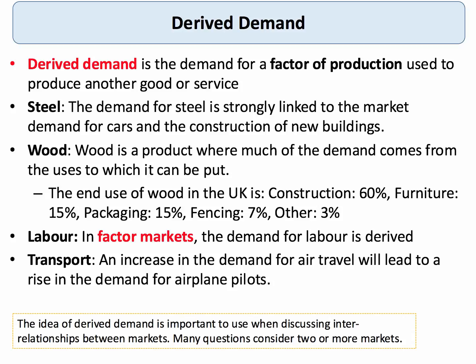Wood has a very strong derived demand — it has many end uses: it can be used in construction, in furniture, in fencing, in packaging, for example wooden pallets. The demand for labour is strongly derived from the demand for the output that labour is employed to produce. In the labour market too, an increase in the demand for air travel and more flights — more traffic in the air — will lead to an increase in the demand for airline pilots.